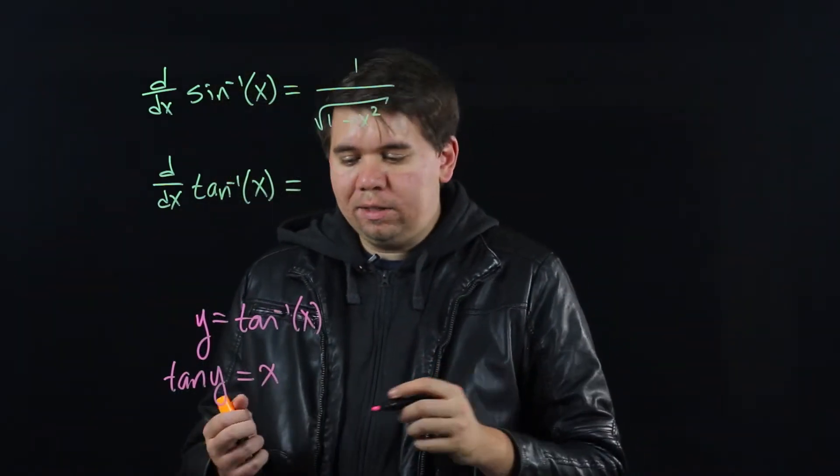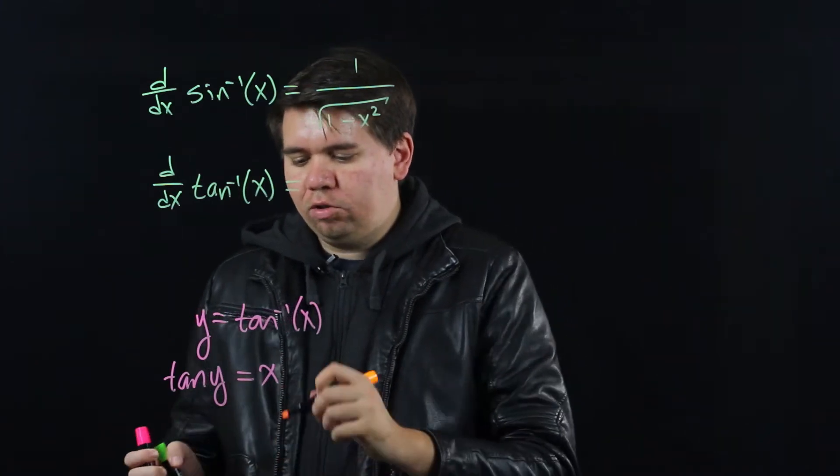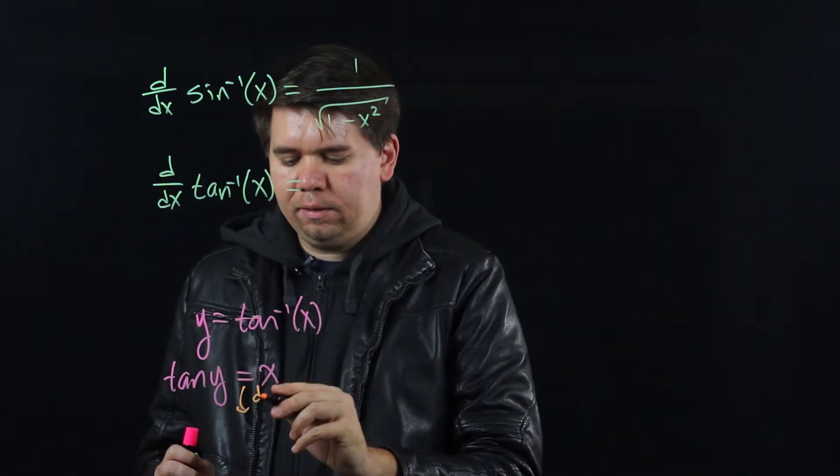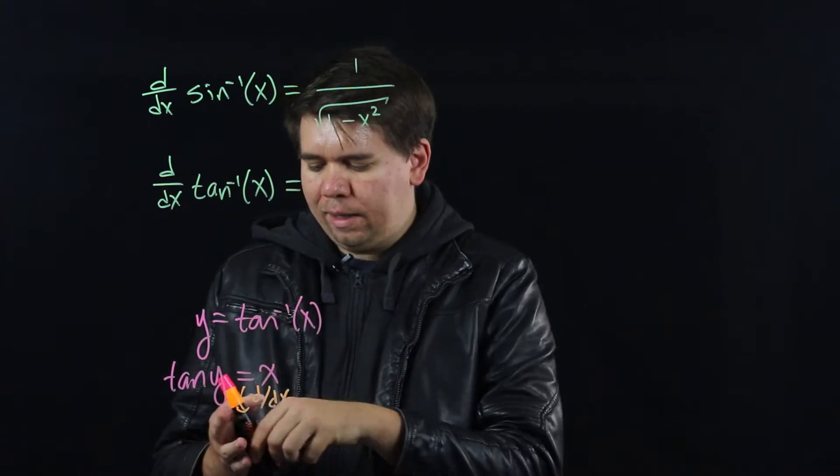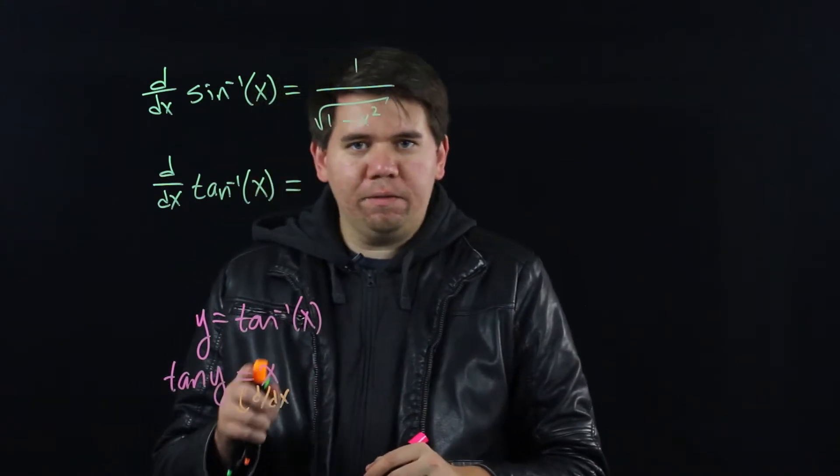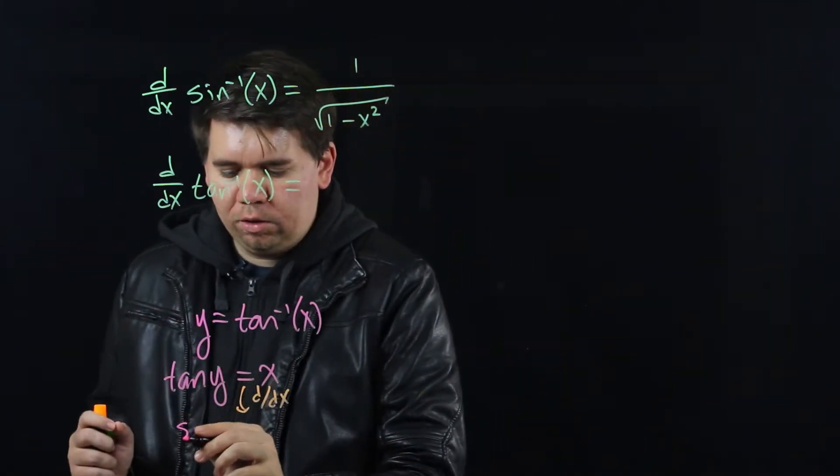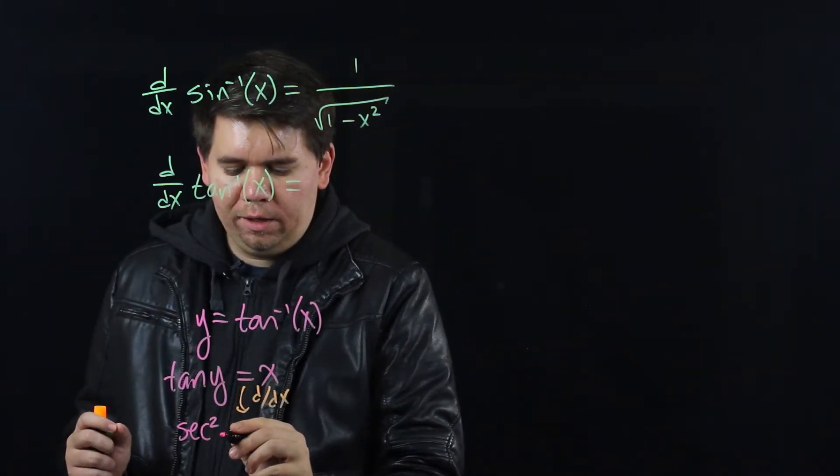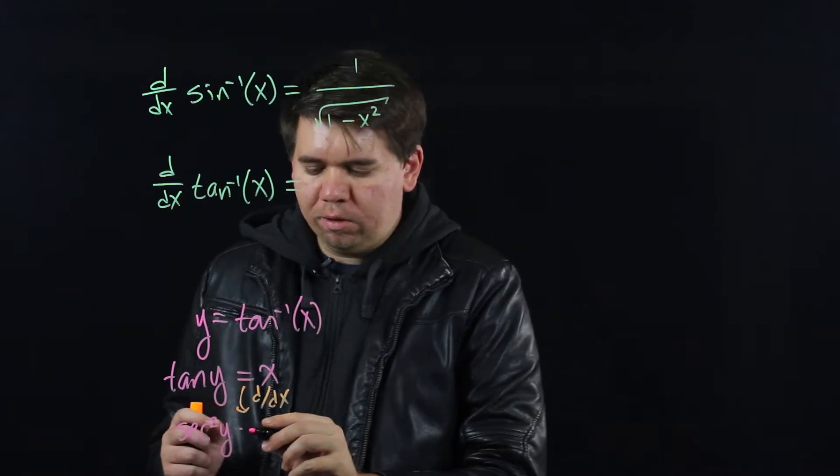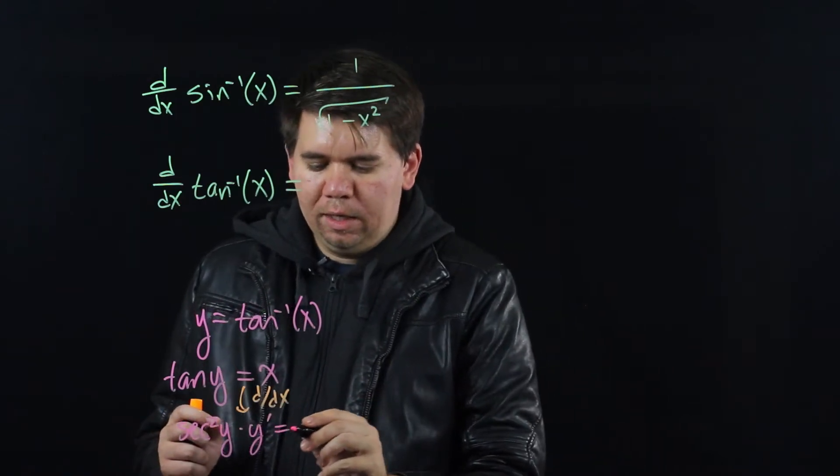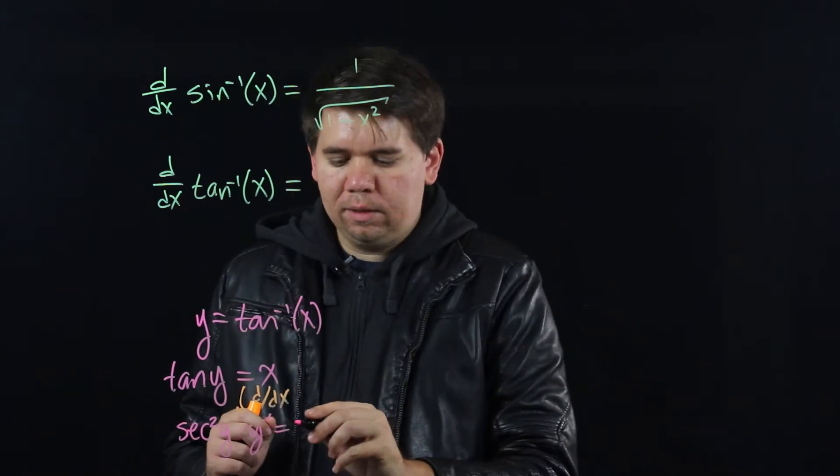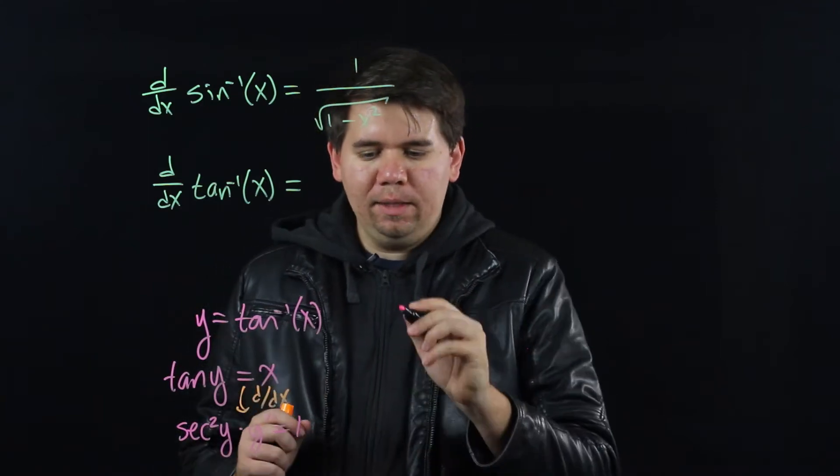Then, using implicit differentiation, we take the derivative of both sides with respect to x. You get the derivative of tangent is secant squared, so secant squared of y, times, by the chain rule, y prime, is equal to the derivative of x, which is 1.